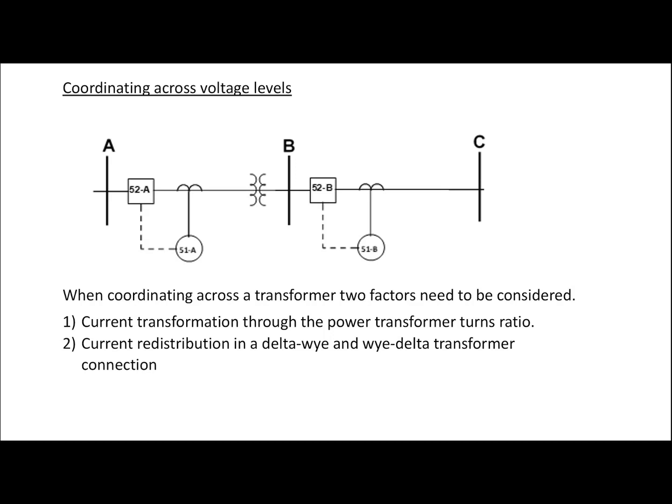In this presentation we're going to be looking at coordinating across voltage levels. So far in ELEC 364, when we've been doing coordination it's been at one voltage level, but the reality is there's going to be a transformer somewhere in the system and we need to know how to handle coordinating through a transformer. There are two factors to consider: the first one being the transformer turns ratio, which means making sure we include the three-phase turns ratio when looking at the current coming through the transformer.